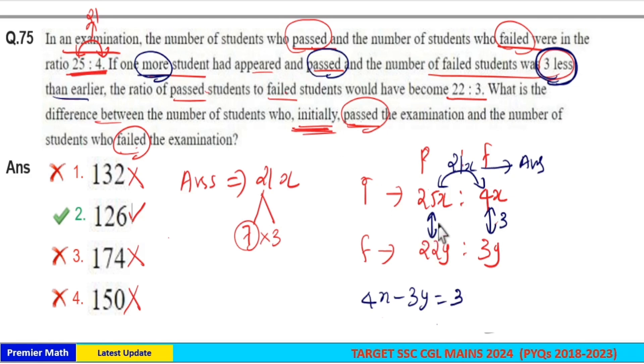The number of failed students is 3 less, which means 3 plus 1, 4 is the difference between passed students finally and initially. So you can form equations with these two pieces of data.